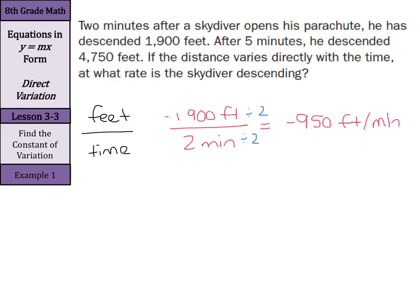It's always good to make sure that these are constant. If we check this by going negative 4,750 feet over the five minutes, we can divide by five on top and bottom. When you take negative 4,750 divided by five, you once again get negative 950 feet per minute. So our answer, the rate the skydiver is descending is negative 950 feet per minute. That's a quick fall.